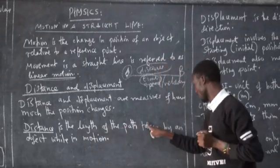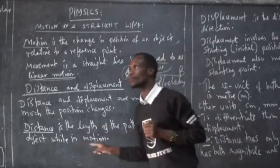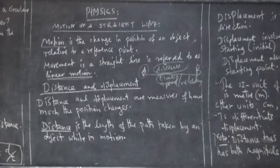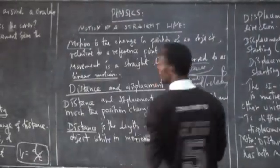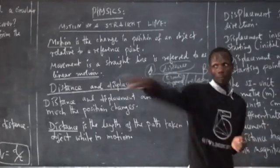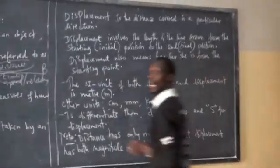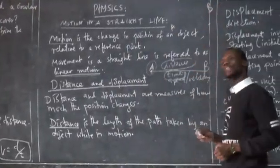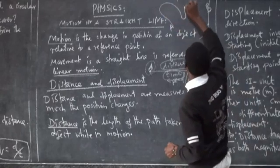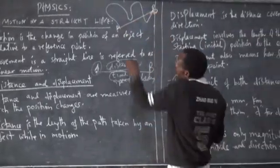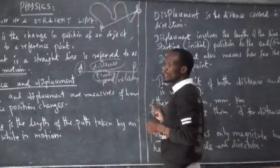Distance is the length of the path taken by an object while in motion. For example, moving from point A to point B, you may decide to go this way, then this way, then this way — even though you were supposed to go straight across. The length of the path taken by the object is called distance.